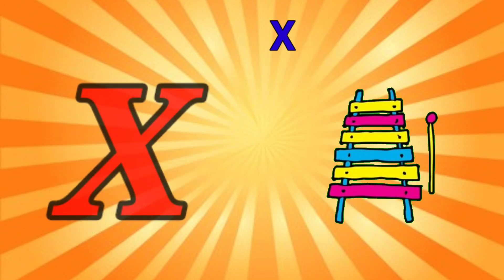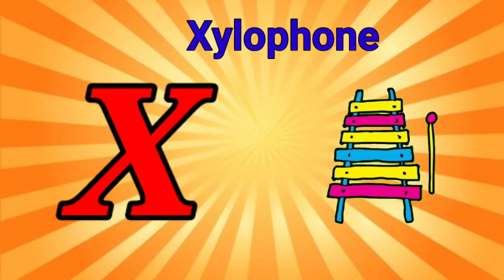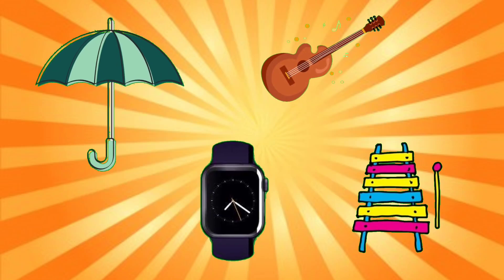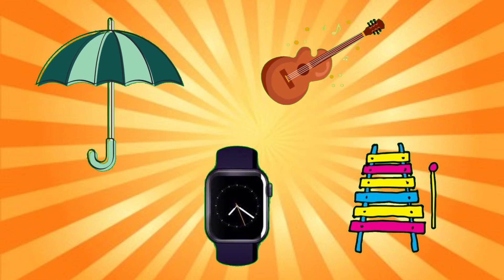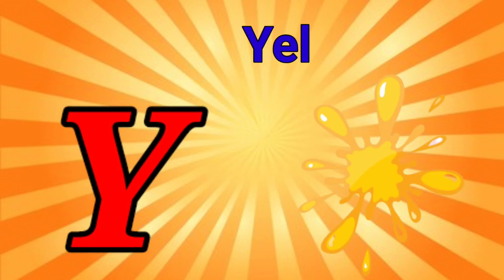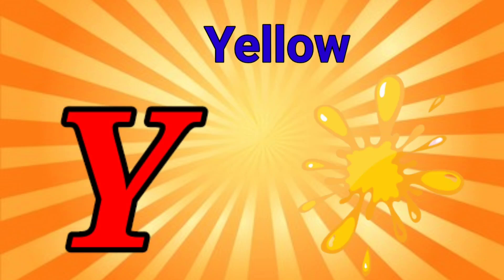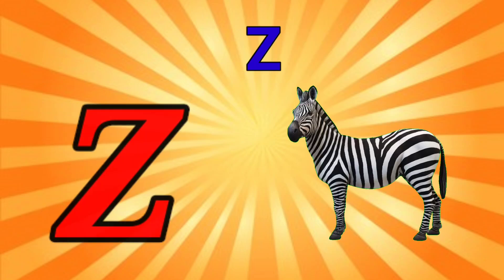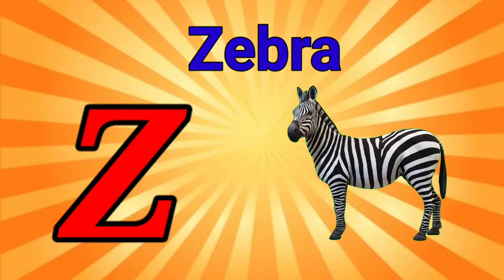X is for xylophone, z-z-xylophone. Y is for yellow, ye-ye-yellow. Z is for zebra, z-z-zebra.